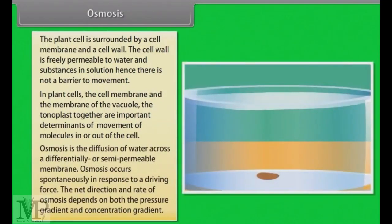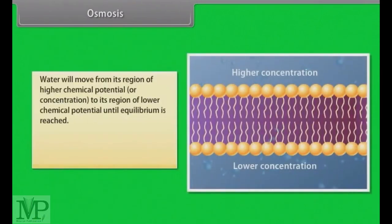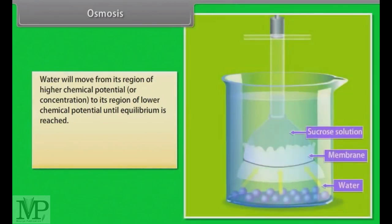Osmosis is the term used to refer specifically to the diffusion of water across a differentially or semi-permeable membrane. Osmosis occurs spontaneously in response to a driving force. The net direction and rate of osmosis depends on both the pressure gradient and concentration gradient. Water will move from its region of higher chemical potential or concentration to its region of low chemical potential until equilibrium is reached. We can better understand it with the help of an experiment. Take a thistle funnel filled with sucrose solution and then keep it inverted in a beaker containing water. The solution of sucrose and water taken in a funnel is separated from pure water in a beaker through a semi-permeable membrane. We will observe that water will diffuse across the membrane to raise the level of the solution in the funnel. This will continue till the equilibrium is reached.